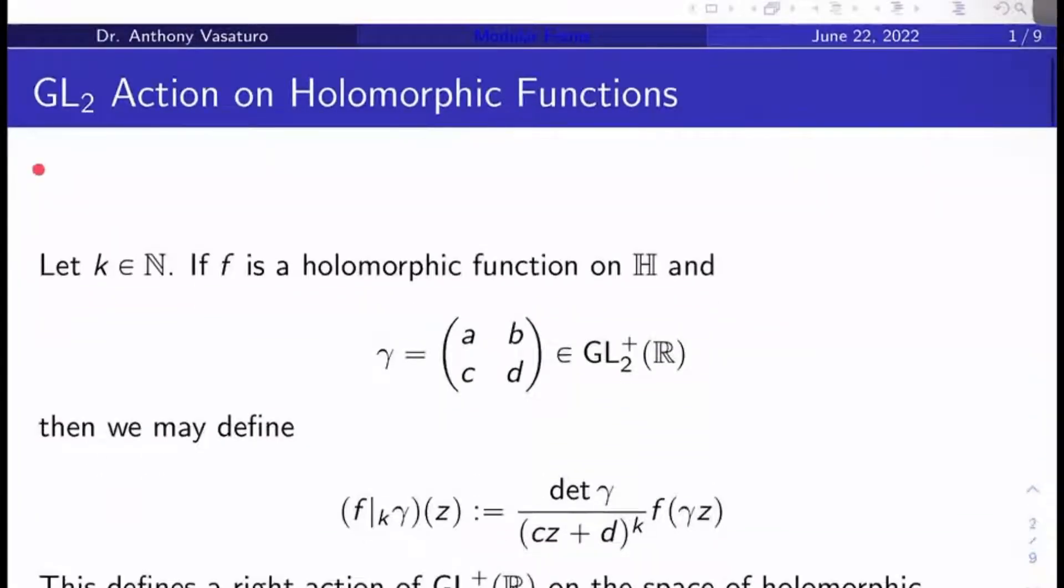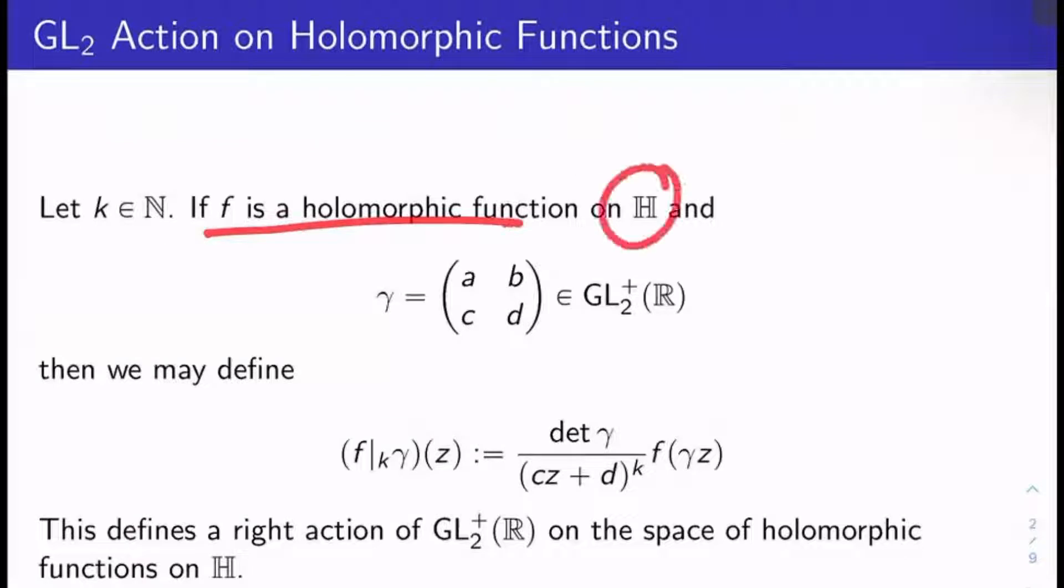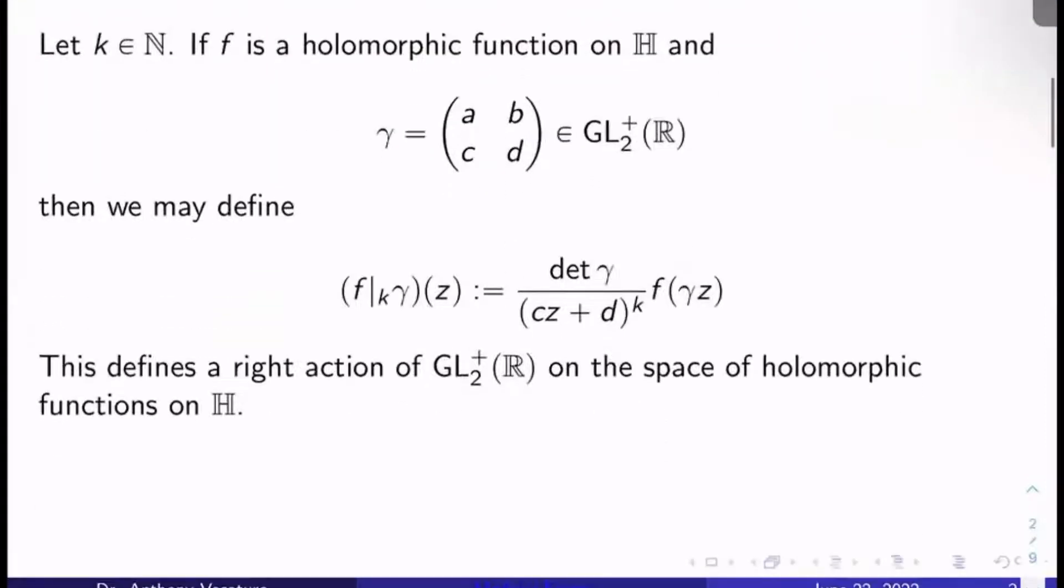So let's start out by observing that if we let k be a natural number and f, a holomorphic function on the complex upper half plane H, and gamma with entries a, b, c, d, let's let that be a matrix in GL_2^+ of R, so that's all the invertible 2x2 matrices with real entries and positive determinant. Then we may define the following gadget, (f|_k γ)(z). It's just going to be the determinant of gamma over (cz + d)^k times f of gamma z.